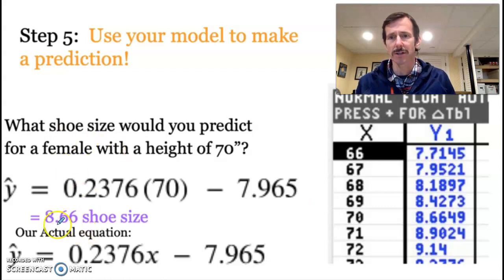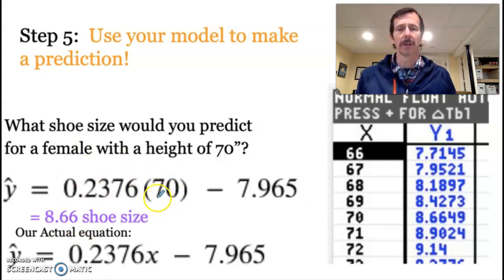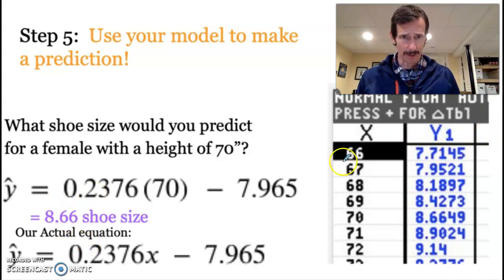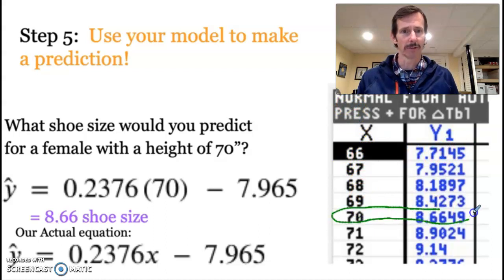So that is the predicted shoe size of a 70-inch female from these IB class data sets. So a shoe size of 8.66, which, again, isn't an actual shoe size, but it gives you an idea about generally where it would be. I used my table to find that actual value instead of plugging it in, just so you know.